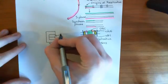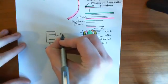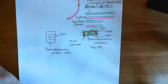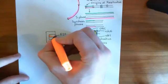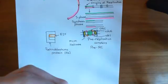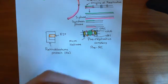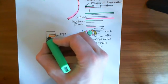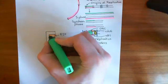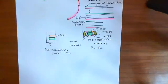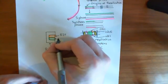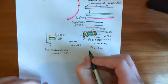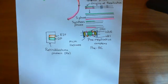The E2F transcription factor is not on its own — it's got a dimerization partner always with it. The box drawn here represents the E2F transcription factor, shown in orange. Next to it, also being sequestered by the retinoblastoma protein, is the dimerization partner of the E2F transcription factor, often abbreviated as DP. So this is the E2F transcription factor with its dimerization partner.